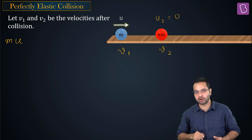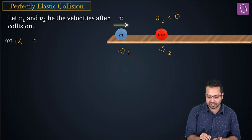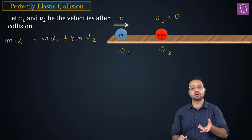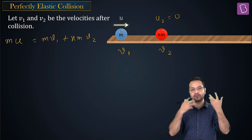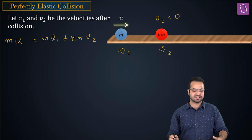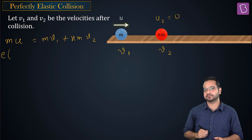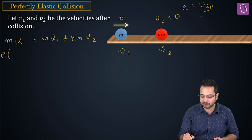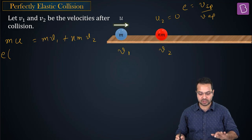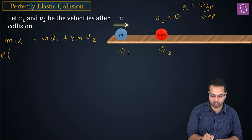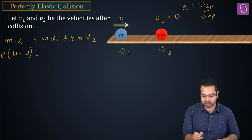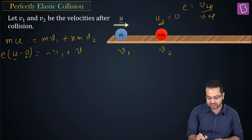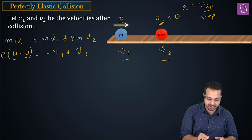Initial momentum of ball one is mu, and of ball two is zero. Final momentum of ball one is mv1 and of ball two is nm·v2 — that is equation one. The second equation uses the coefficient of restitution: e times velocity of approach equals velocity of separation. So eu equals v2 minus v1.